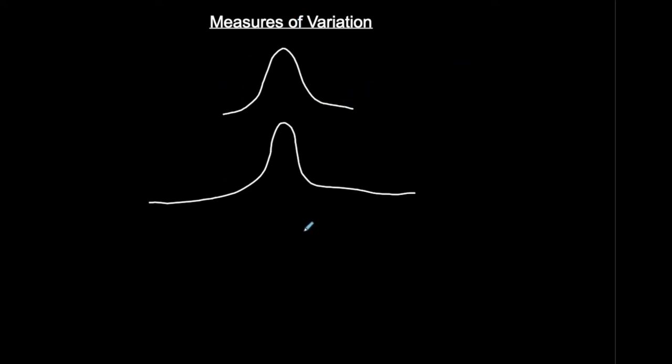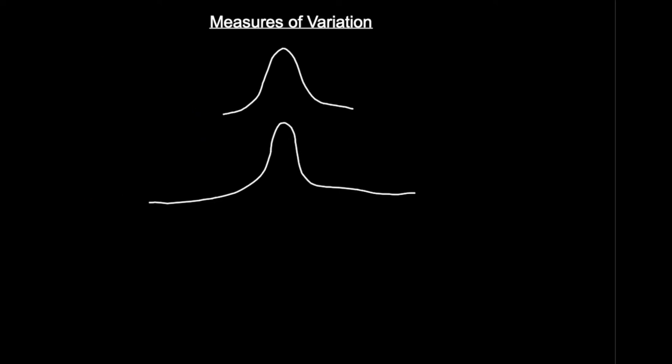So how do we measure the difference in variation between this and this? Well, your measures of variation are the following three values. First one is called the range. And the range is very simple to find: max value minus min value. That's your range.